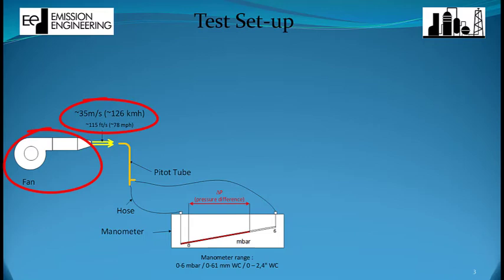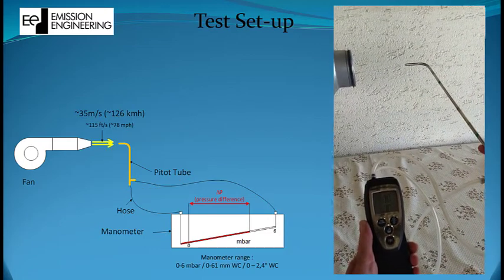In order to verify the velocity, we use the pitot tube, measuring the pressure drop and back calculating the velocity from there. As soon as the fan is started, the pitot tube quickly measures the air velocity.